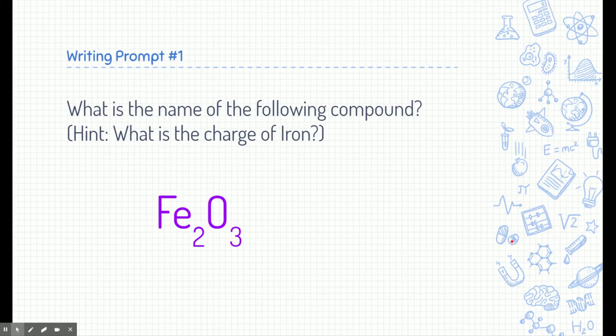Here's a practice prompt — pause the video and see if you can answer this question based on what we just learned: What is the name of the following compound? Apply the naming rule from the last module — name the metal, then the nonmetal, ending in 'ide.' But this compound contains a transition metal, so we need to figure out the charge of that transition metal first.